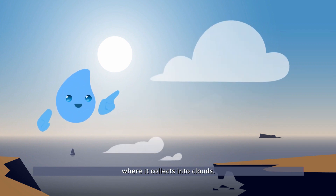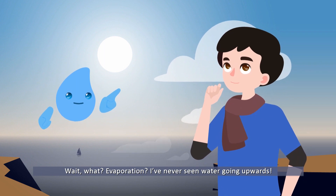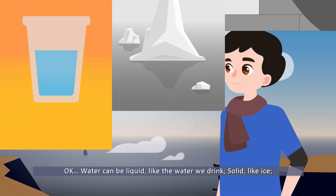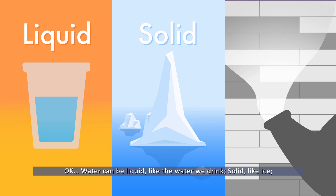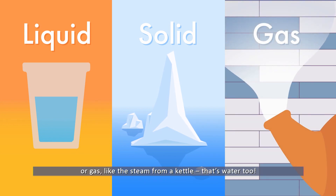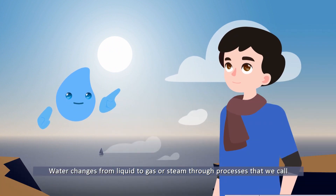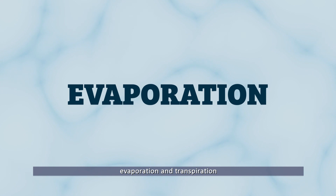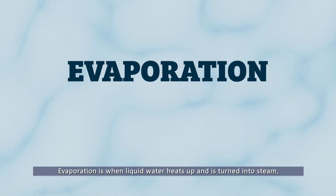The heat from the Sun warms the seawater, which evaporates and rises high into the atmosphere, where it collects in the clouds. Water can be liquid like the water we drink, solid like ice, or gas like the steam from a kettle. Water changes from liquid to gas through processes we call evaporation and transpiration.